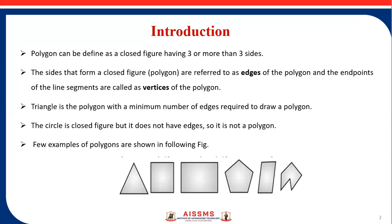Less than 3 sides cannot form a polygon. Triangle is the polygon with minimum number of edges. The circle is a closed figure but it does not have edges, so it is not a polygon.